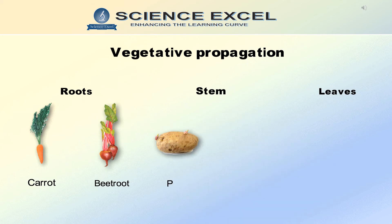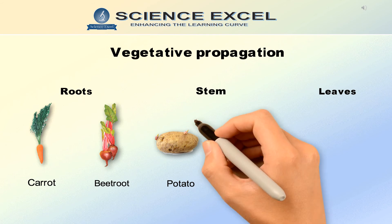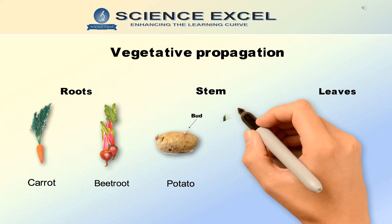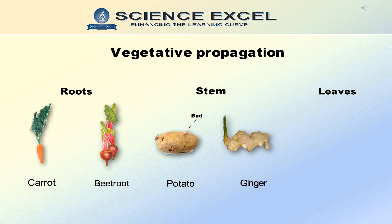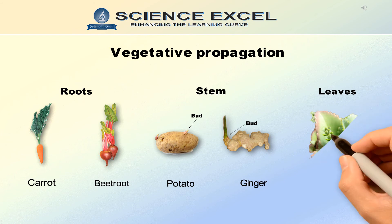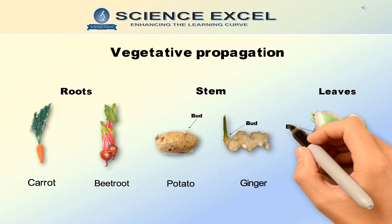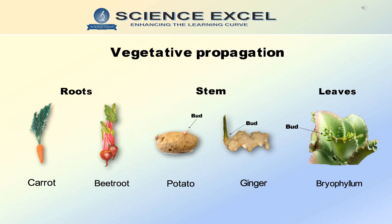The potato is a modified stem that bears vegetative buds called the eye — new plants grow from these buds. Another example is ginger, which is also a modified stem that bears axillary buds from which new plants grow. Leaves of some plants like bryophyllum produce buds on the leaf margin. When such leaves fall in moist soil, the buds present in the leaf margin begin to grow and form young plants.